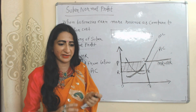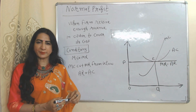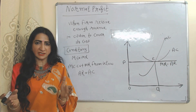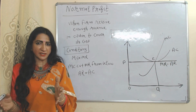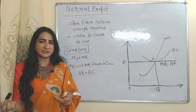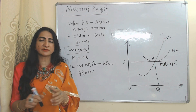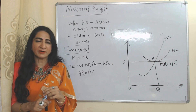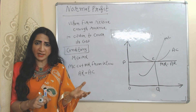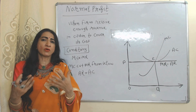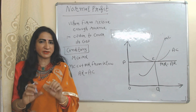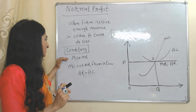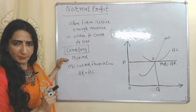Now we will see normal profit. When a firm receives enough revenue in order to cover its cost, it will be called normal profit.